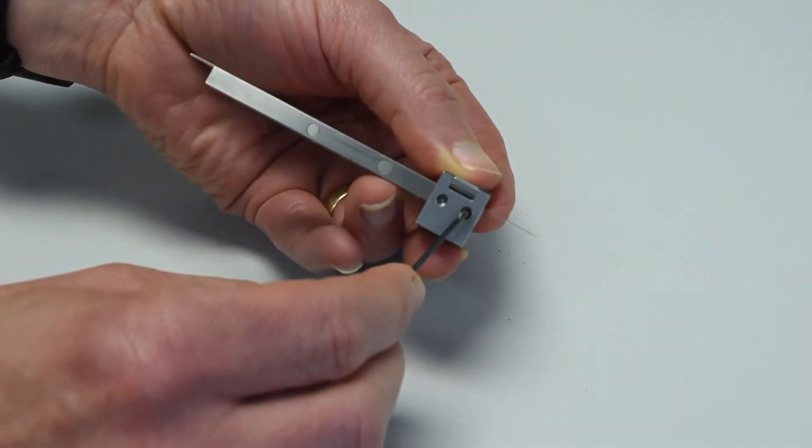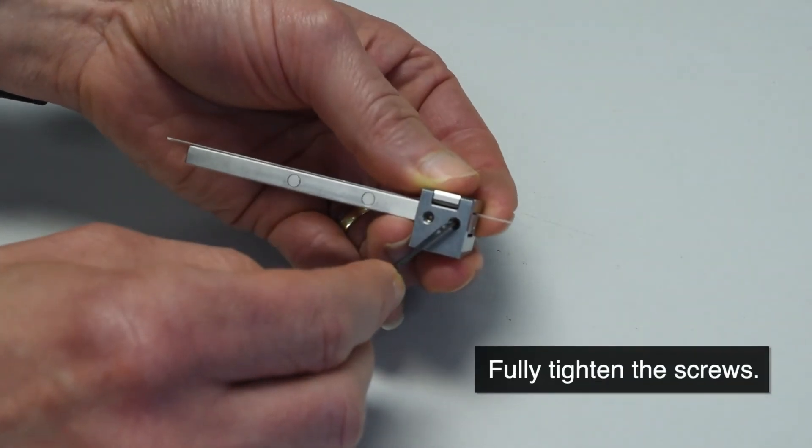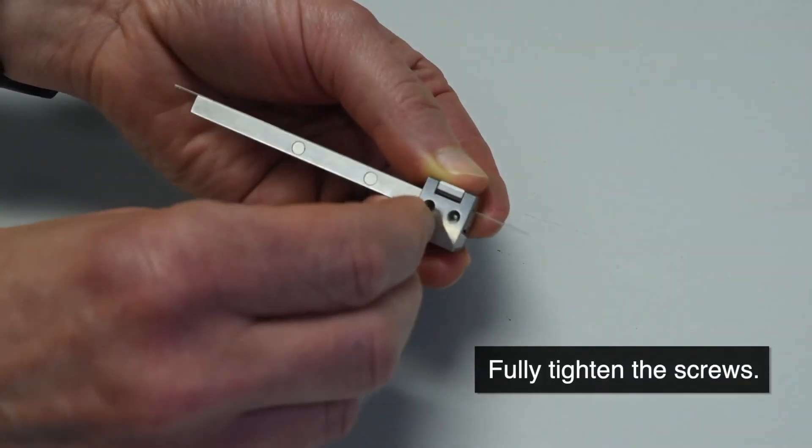Once the height of the insert in the transfer clamp has been set correctly, fully tighten the back screws of the transfer clamp.